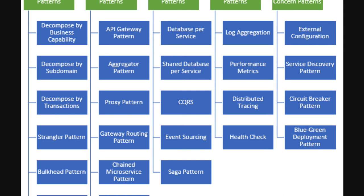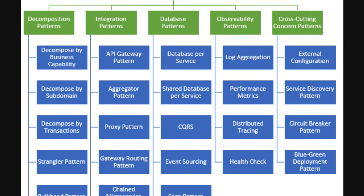Database patterns: Database per Service. Microservices should always have their own data source. Services must be loosely coupled and deployable and scalable independently, so each should have an independent data source. To achieve a highly decoupled application, one database per microservice should be the default design — private to the service, accessible only through its APIs. However, a Shared Database can be used when, for example, two microservices both need to check a Redis cache.